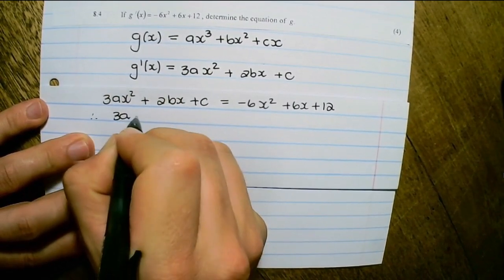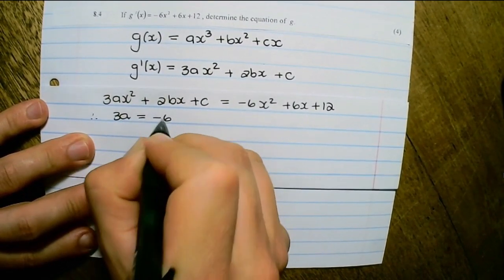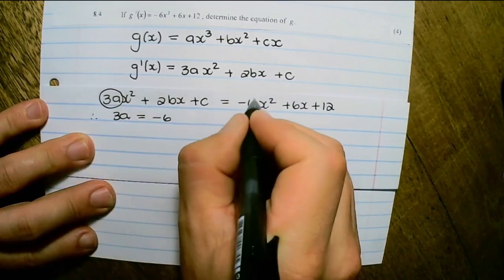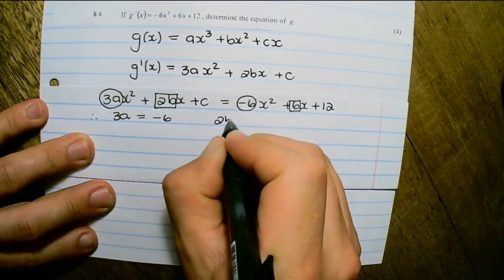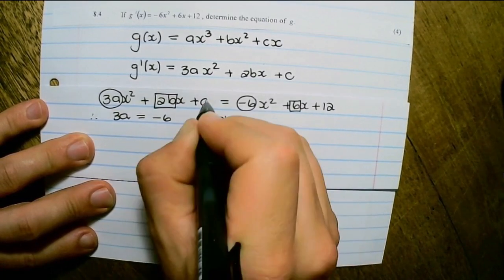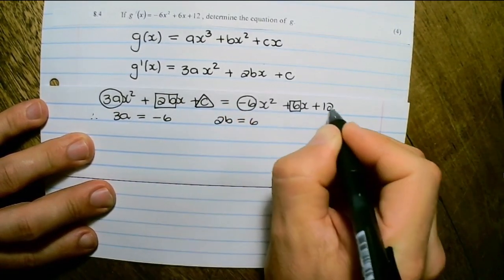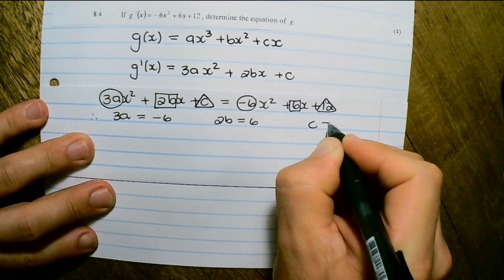So 3a would be equal to negative 6. 2b would be equal to 6. And the constant c would be equal to 12.